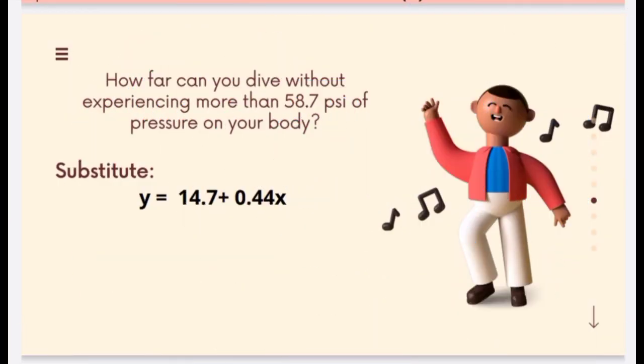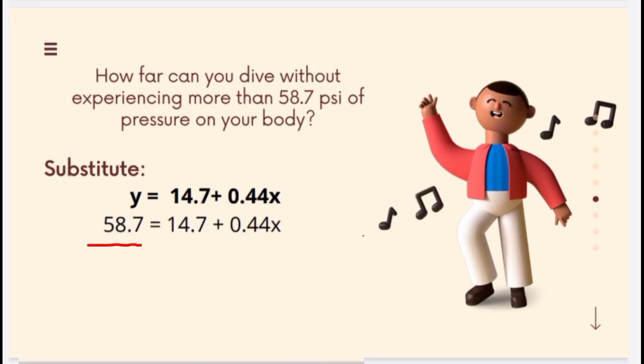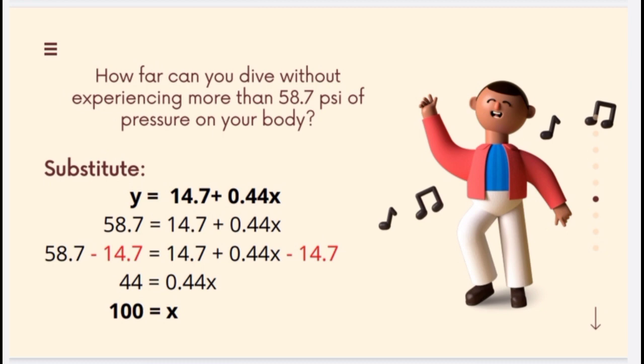Now, how far can you dive without experiencing more than 58.7 psi of pressure on your body? To answer this, we will be using the function rule: y equals 14.7 plus 0.44x. 58.7 is a value of y because it's a pressure on your body, so we'll simply substitute this to our y. To isolate x on one side, we have to subtract 14.7 on both sides. Operating the left side, 58.7 minus 14.7 equals 44. Divide both sides by 0.44 to get x. Therefore, our final answer is 100.